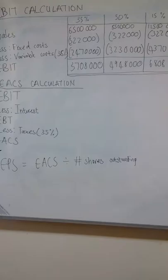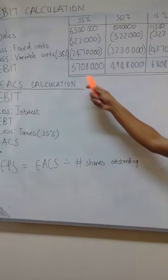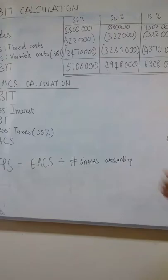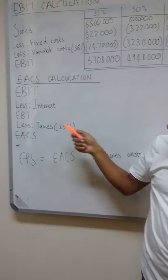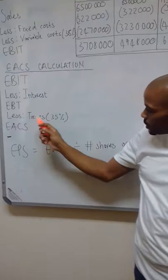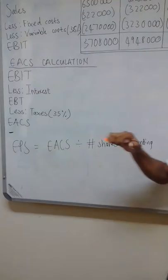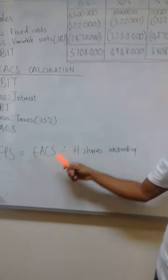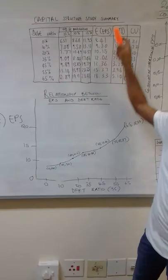By doing that, we get our EBIT values for the different probabilities. The next step would be calculating the earnings available to common stockholders. This would be done by taking our EBIT values, less the interest associated with the capital structures, and we get earnings before taxes. From the earnings before taxes, we then less the taxes, which is 35% of the earnings before tax, and then we get our earnings available to common stockholders. The last step would then be to calculate our EPS by taking our earnings available to common stockholders and dividing it by the number of shares outstanding, giving us our EPS values for the different probabilities.